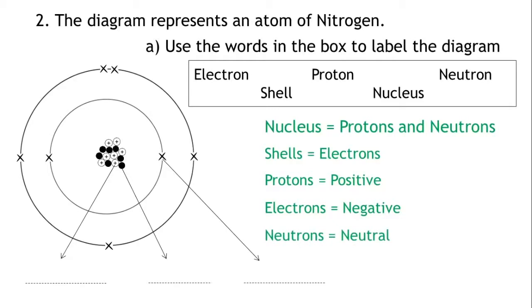If we look at the arrows on the diagram we can see that the first arrow is pointing from a part of the atom outside the nucleus. It's pointing to a particle on a shell, therefore this particle must be an electron.